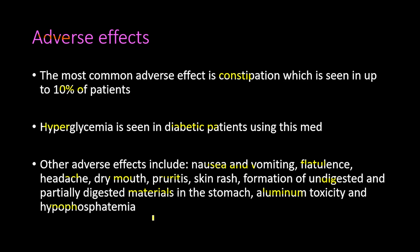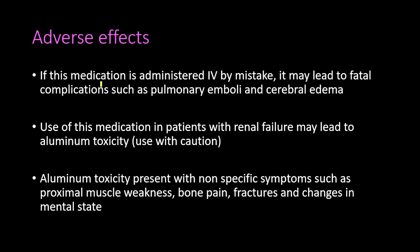Sucralfate inhibits phosphate absorption, contributing to hypophosphatemia. If this medication is administered intravenously by mistake, it may lead to fatal complications such as pulmonary emboli and cerebral edema. Use in patients with renal failure may lead to aluminum toxicity, because aluminum is excreted through the kidneys — once the kidneys fail, aluminum builds up and leads to toxicity, presenting with non-specific symptoms such as proximal muscle weakness, bone pain, fractures, and changes in mental state.